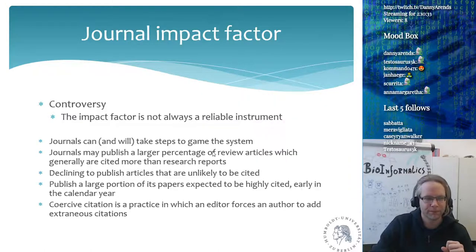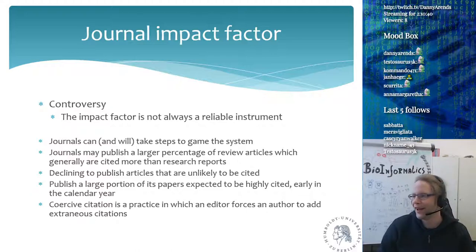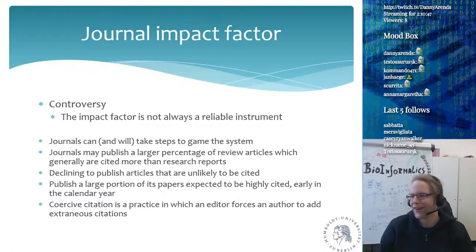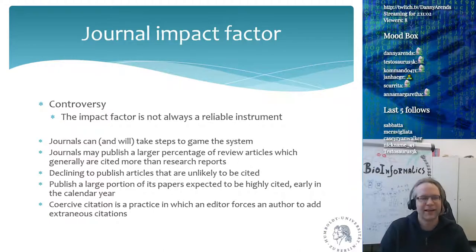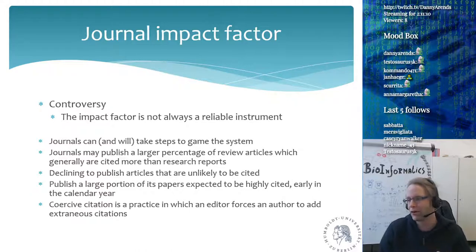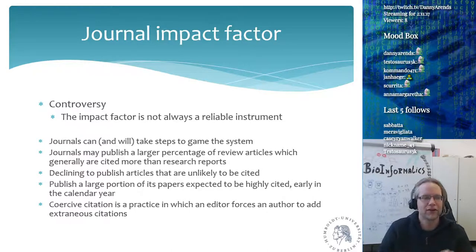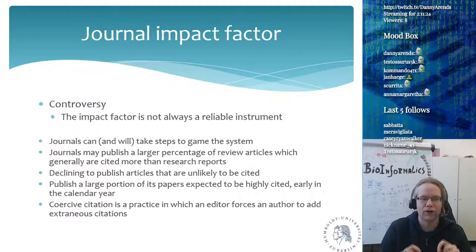That is one of the drawbacks of the journal impact factor. There is a lot of controversy around impact factors because it's not always a reliable instrument. One of the things journals do is publish a large percentage of review articles, because review articles are generally cited more.